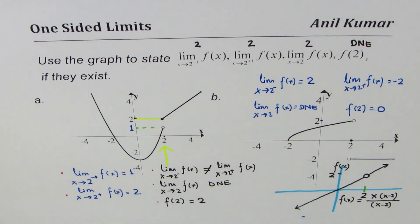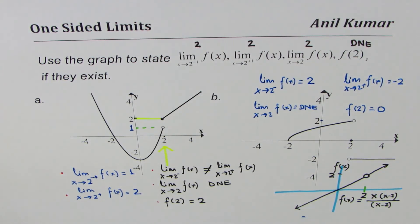What you also learn here is that even if a function is discontinuous, the limit may exist. The value of the function at that point may not exist. This reminds us of the basic concept of limits: we are not at that point, but very, very close to it. When we are very close to that point, do we approach somewhere? If yes, the limit approaches a value. If we are not approaching the same point from both sides, then the limit does not exist at that point.